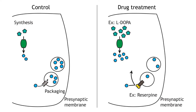Drugs can alter neurotransmitter synthesis pathways, either increasing or decreasing the amount of neurotransmitter made in the terminal, affecting how much transmitter is released. An example of this is administration of L-DOPA, a dopamine precursor molecule that results in increased dopamine production. It is used as a treatment for Parkinson's disease.